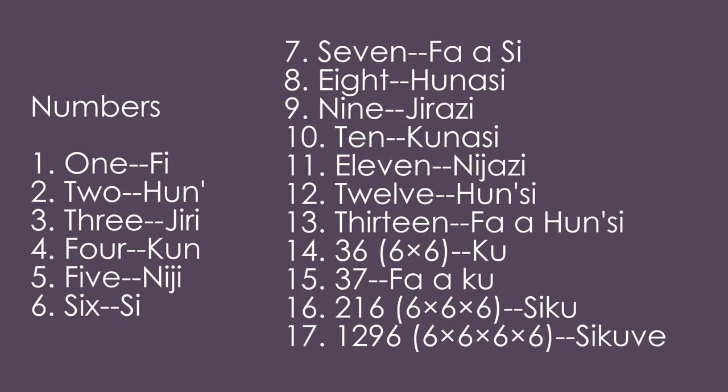Let's count with their basic system. And now we've counted all the way to 13. Once you get six sixes, that's a ku — which means 37 is fa-aku. Six times six times six, which is 216, is siku. And 1296, which is 6 to the 4th power, is siku-we.